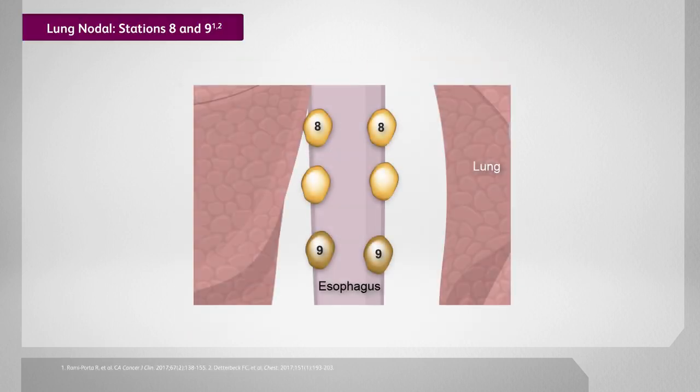Moving on, stations 8 and 9 are the paraesophageal and pulmonary ligament lymph nodes. The main thing to consider here is that you will inevitably be giving a bigger dose to the esophagus when you have disease involvement in these stations. However, it is relatively rare for a stage 3 lung cancer to have levels 8 and 9 involved.